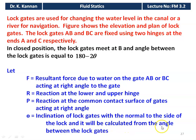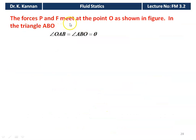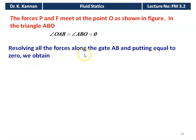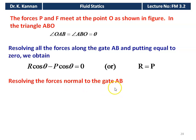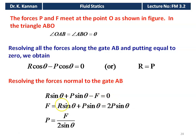The forces P and F meet at a point O as shown in the figure in triangle ABO. The angle OAB equals θ. Resolving all forces along gate AB and putting equal to zero, we obtain R cosθ minus P cosθ equals zero, or R equals P. Resolving forces normal to gate AB: R sinθ plus P sinθ minus F equals zero, giving F equals 2P sinθ, therefore P equals F / (2 sinθ).